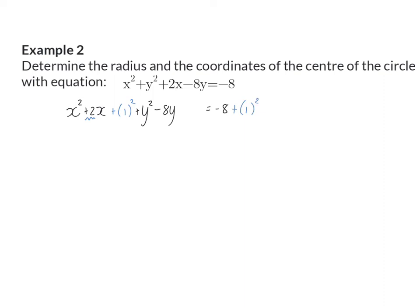I am also going to take half of y's coefficient, so half of minus 8 is minus 4, squared, and I will add that on both sides.